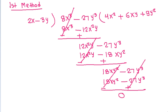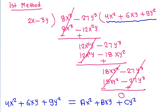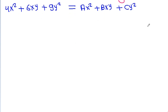So the result of the division is 4x² + 6xy - 9y². This is equal to ax² + bxy + cy², and hence we can get a = 4, b = 6, and c = 9.